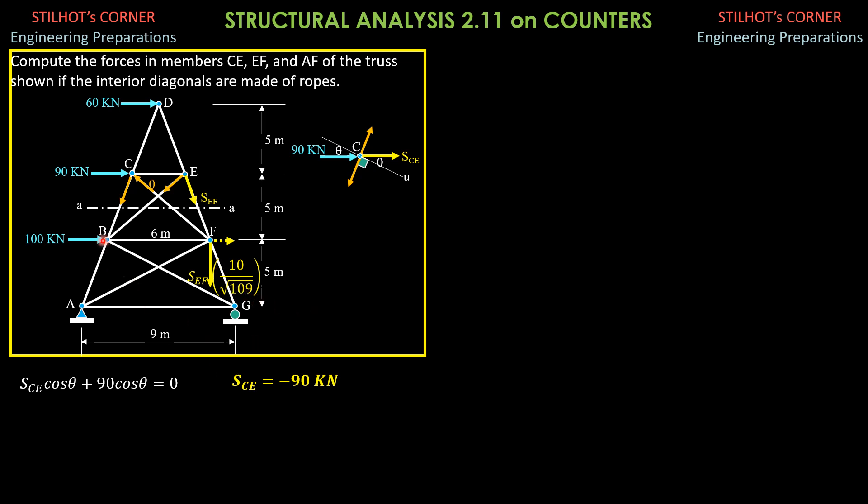Summation moments about B equals zero, clockwise positive. SEF times 10 over square root of 109 times 6 plus 90 times 5 plus 60 times 10 equals zero. From here, we can now solve SEF and SEF is equal to negative 182.7 kilonewtons.